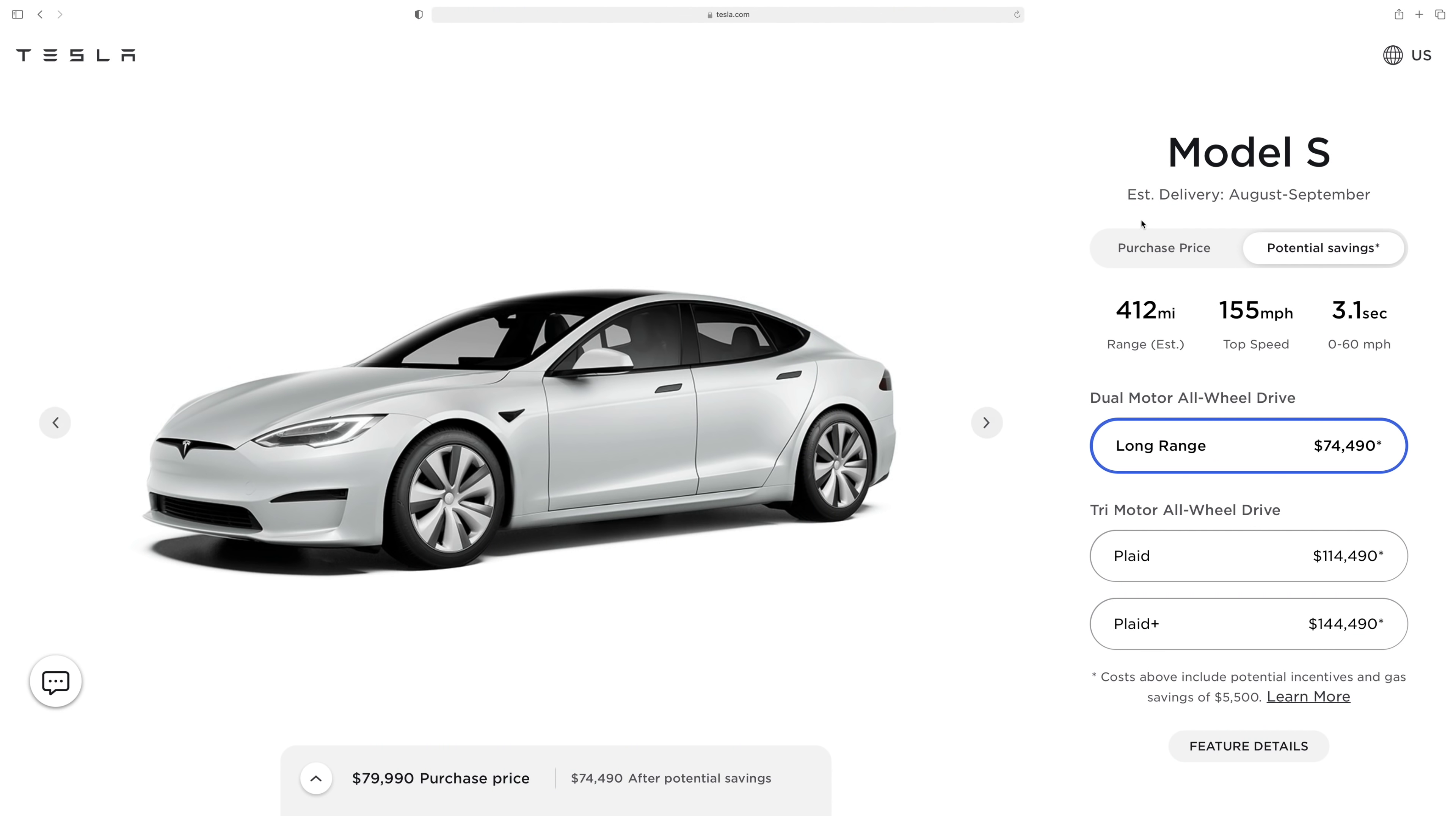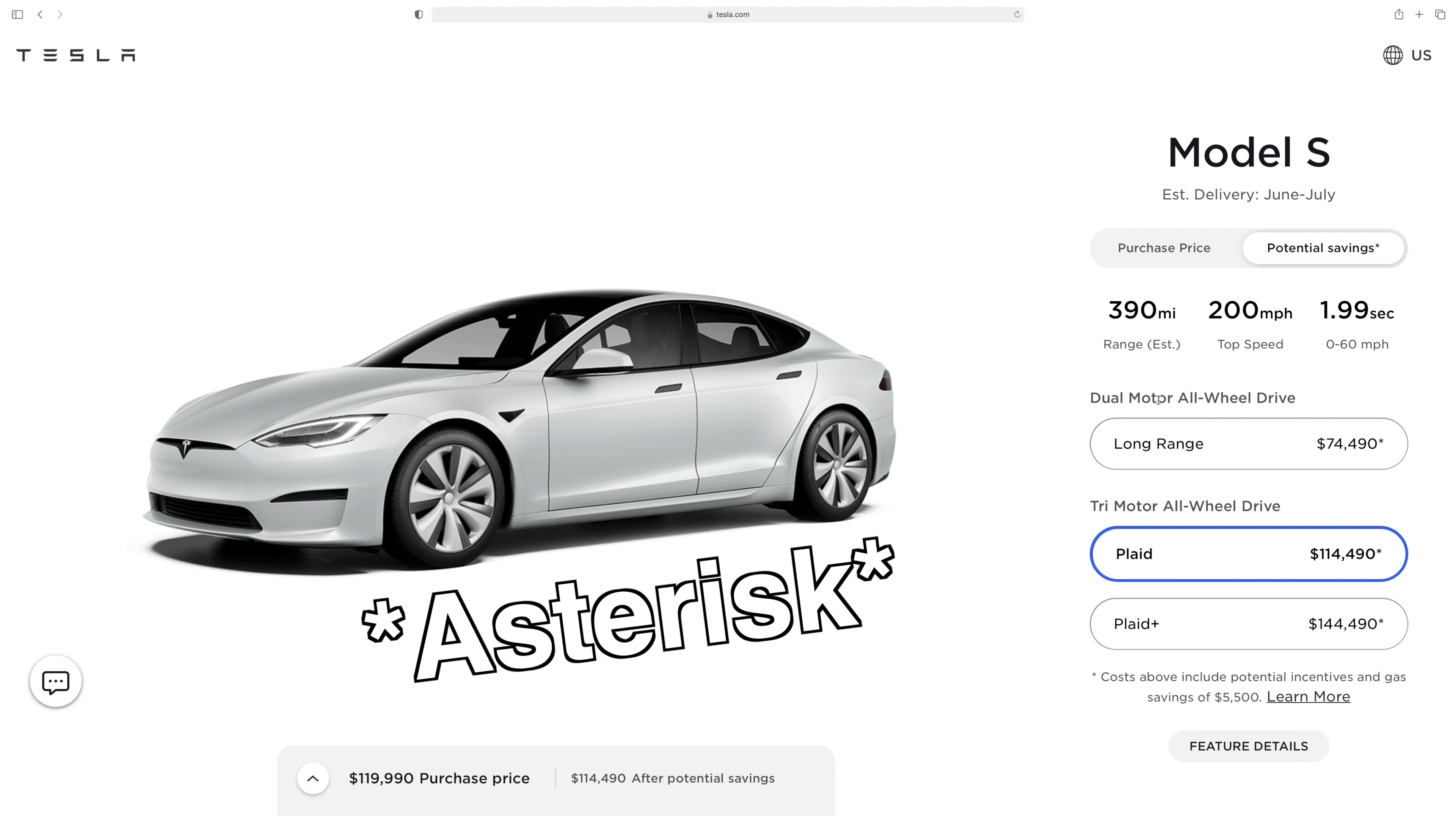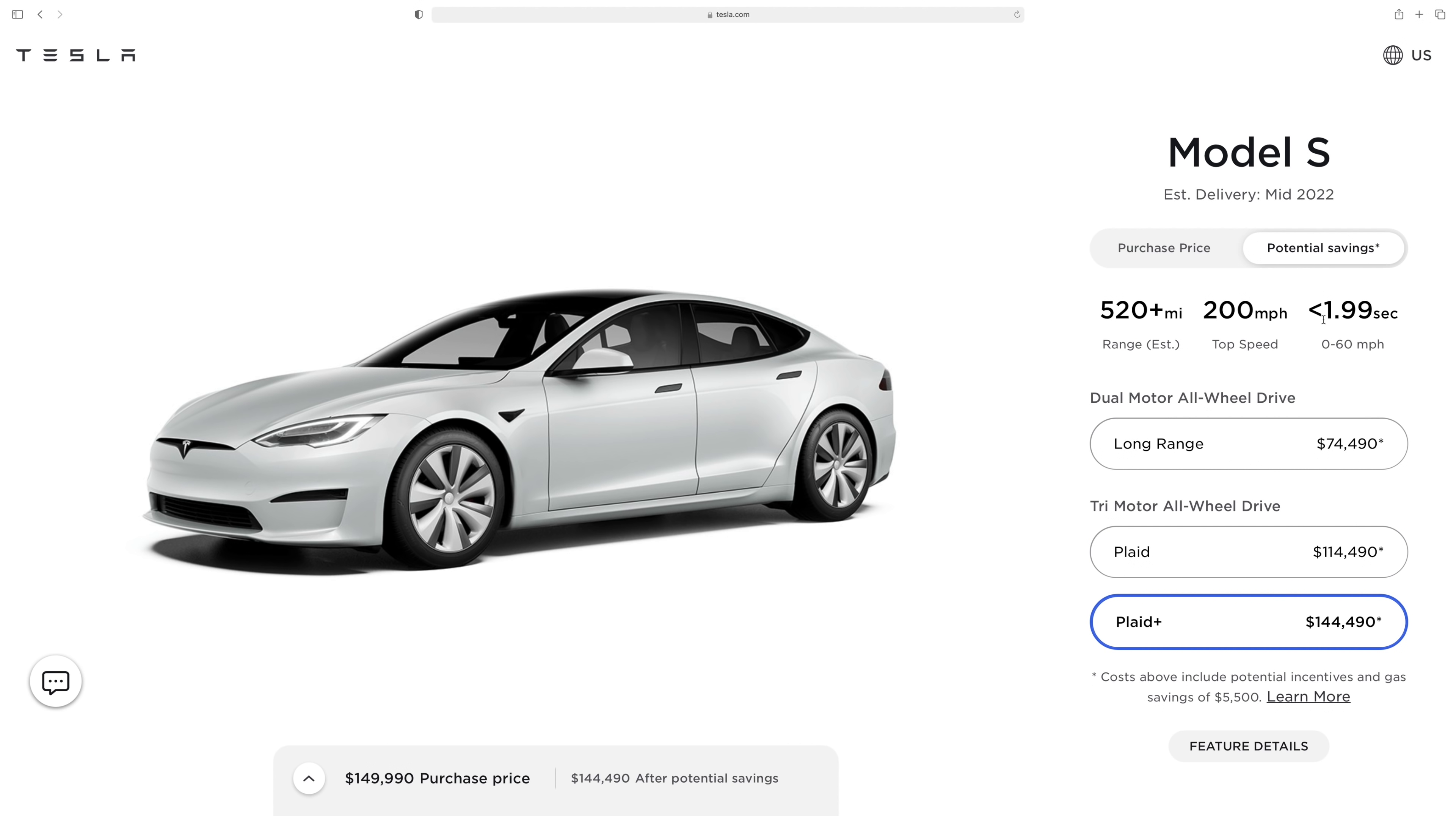So here's the problem, if you go to Tesla's website you'll see three options for the Model S. The long range with a claimed 0-60 of 3.1 seconds, note that there is no asterisk next to this claim, then the Plaid with a 0-60 of 1.99 seconds, again note that there is no asterisk next to this claim, and finally Plaid Plus with a 0-60 of less than 1.99 seconds, and again no asterisk next to this claim.